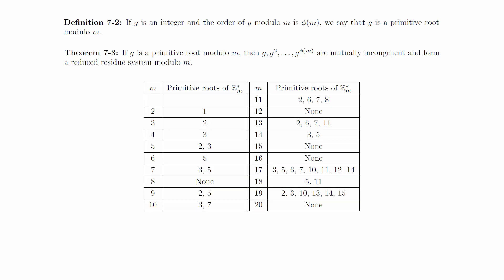This chart shows us all the primitive roots modulo m for various values of m. Notice that some have primitive roots and others don't. If you spent some time sifting through the data, you would eventually discover that there's a pattern for when primitive roots exist.